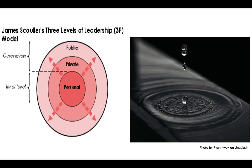A good example to remember is a droplet of water falling onto a bowl of water — notice how the ripples form, starting from the middle where it's strongest and moving out in waves. That's how the personal moves out to the private and out to the public.